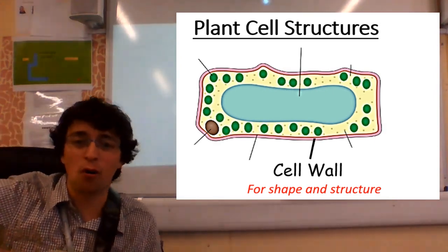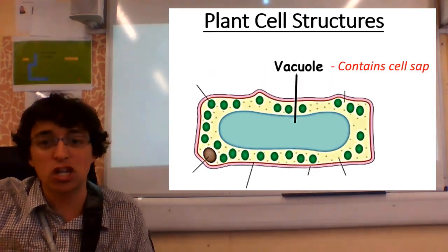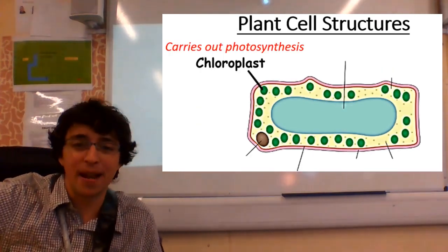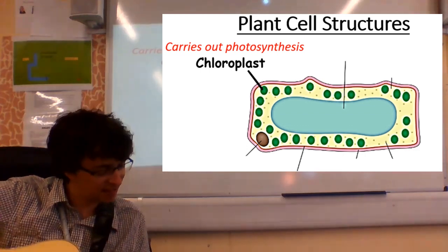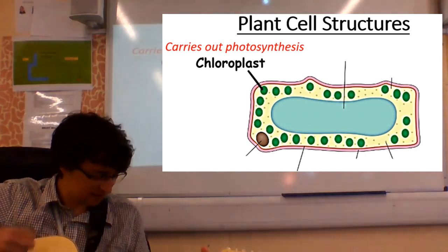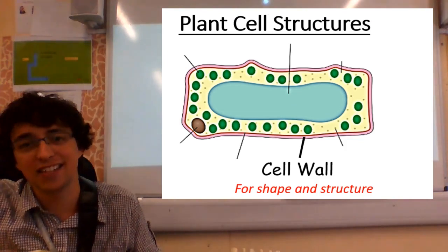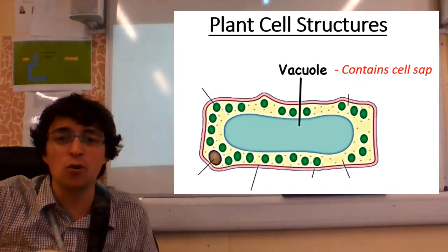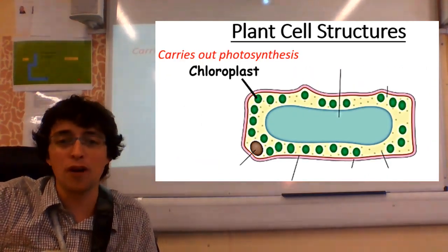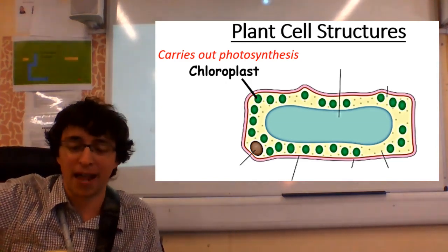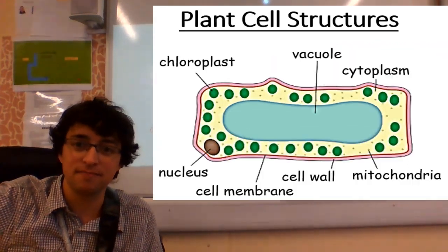Plant-cells have cell walls. Plant-cells have vacuoles. Plant-cells have chloroplasts for synthesis. Plant-cells have a nucleus, membrane, and cytoplasm.